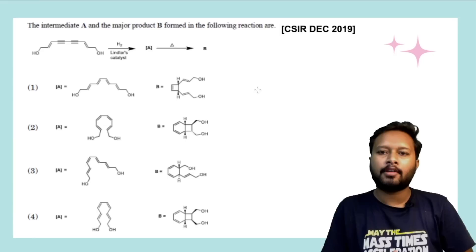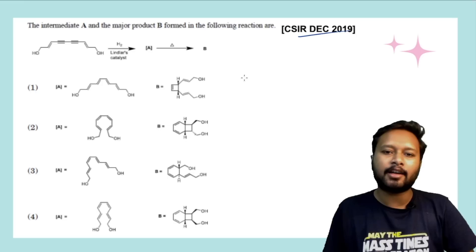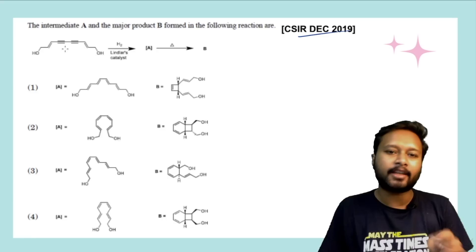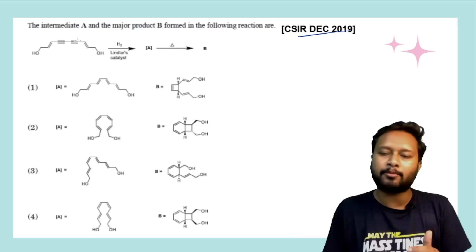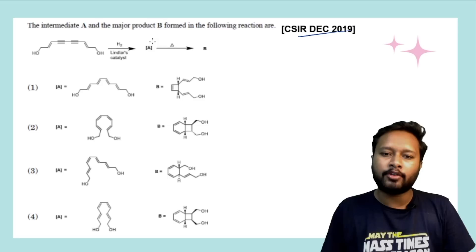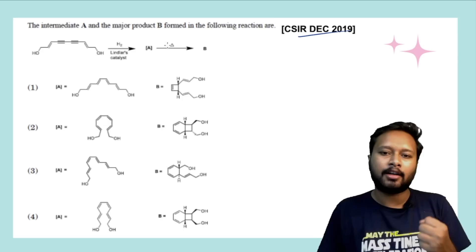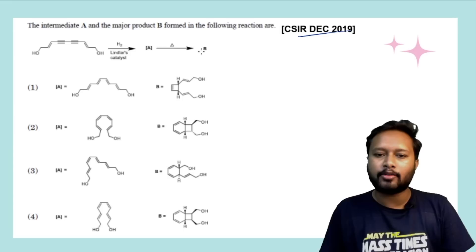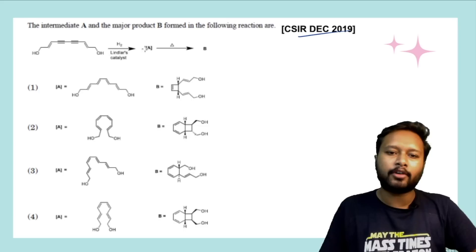Let's take this question which was asked in the CSIR December 2019 exam. This question is based on pericyclic reactions, but you also need to work with an organic reagent first. You are given a molecule and asked to react it with H₂ in the presence of Lindlar catalyst to get product A, and then derive product B.